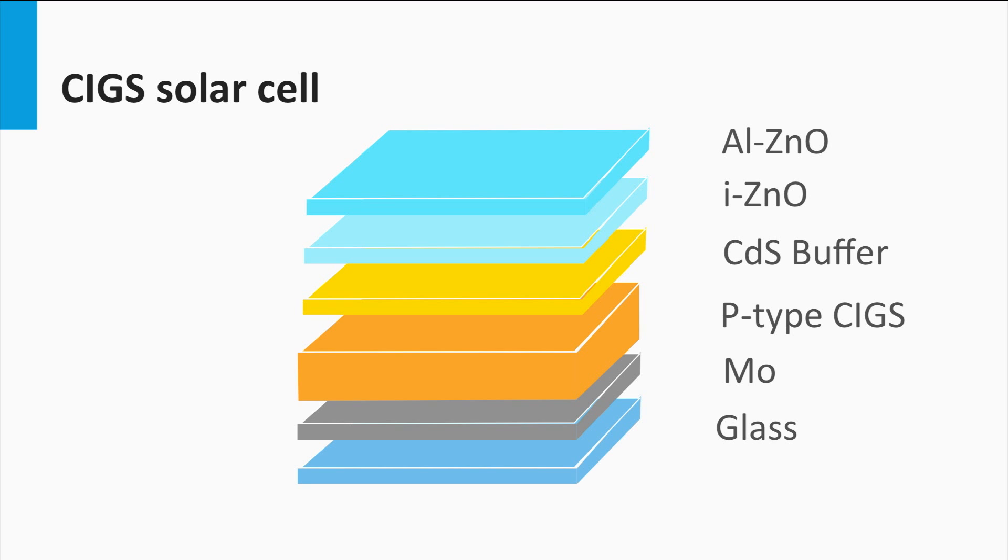Similar to some concepts of the thin film silicon technology, the aluminum doped zinc oxide acts like a transparent front contact for the solar cell. On top of this transparent conductive oxide, anti-reflective coatings can be placed, as discussed for the crystalline silicon technology.